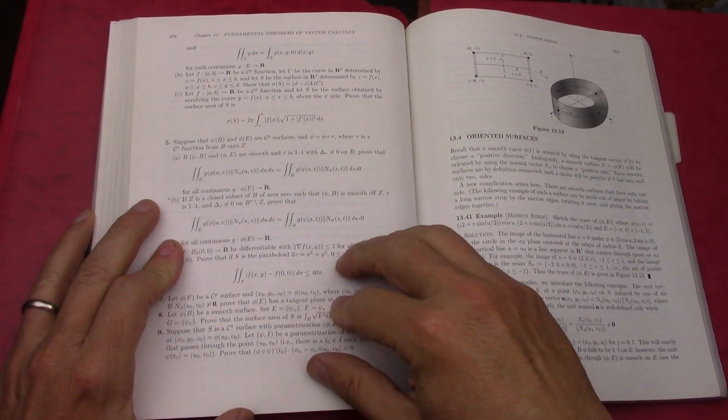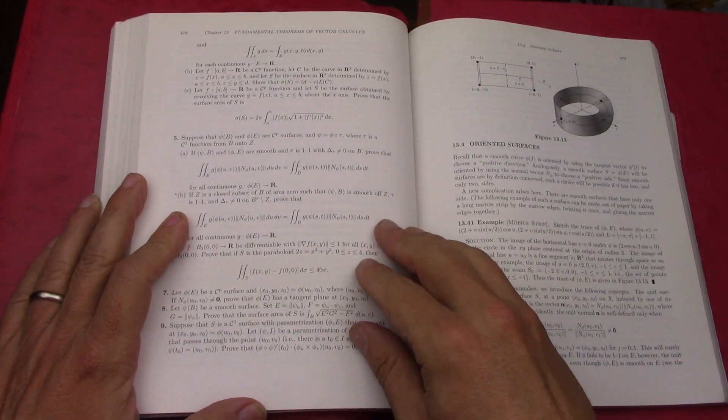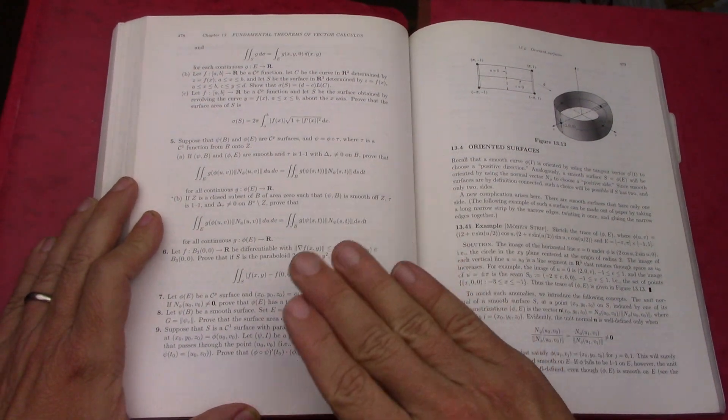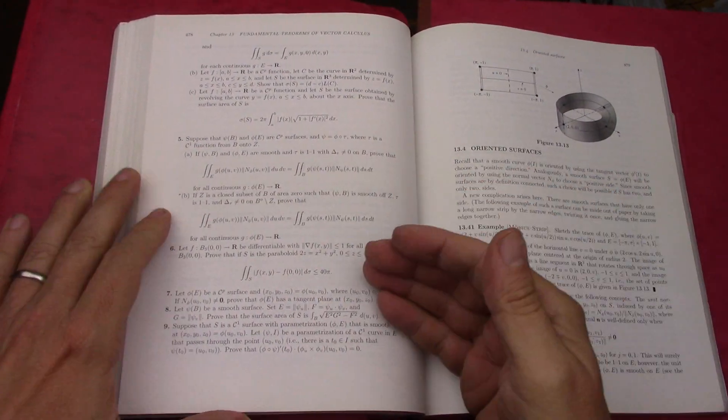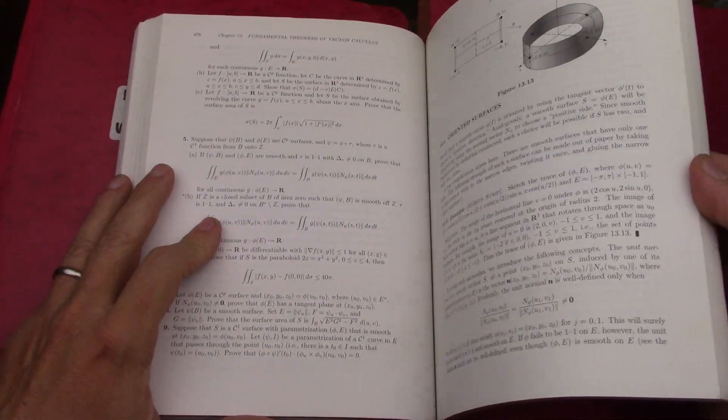Chapter 13 requires me to do some more vector calculus outside of it, and I want to do that later. Do it once, do it right. Now I would have done the problem just to say that I've done them, and that's not good enough for me.